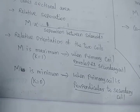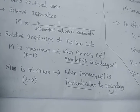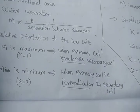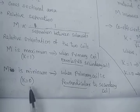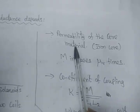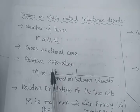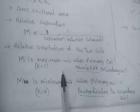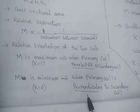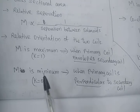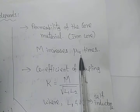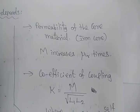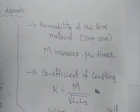The relative orientation of the two coils also matters. If the primary coil is wound over (enveloping) the secondary coil, mutual inductance is maximum. When the primary and secondary coils are perpendicular to each other, mutual inductance is minimum. Permeability is another factor. If a soft iron core is placed inside the solenoid, the mutual inductance increases by the relative permeability of that iron core.